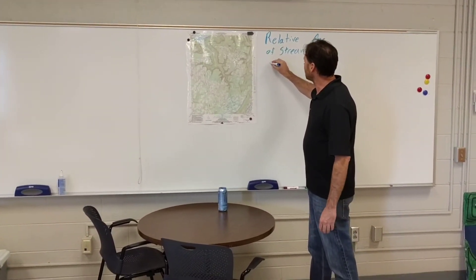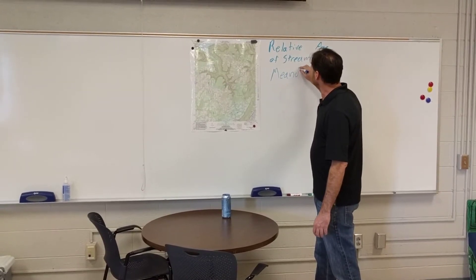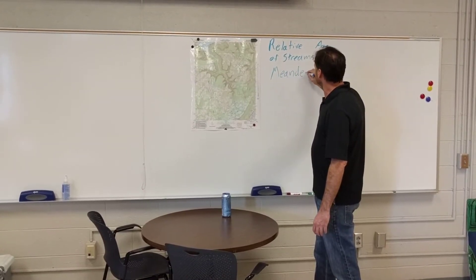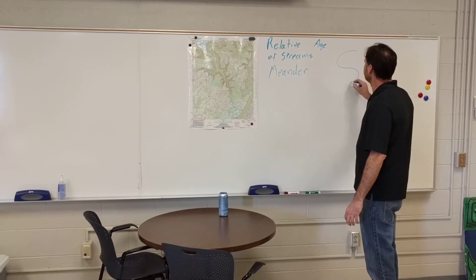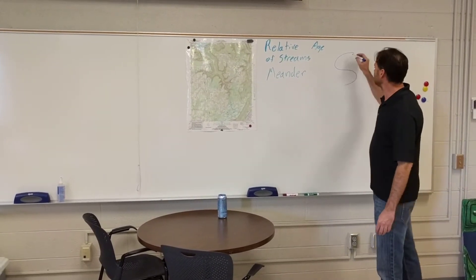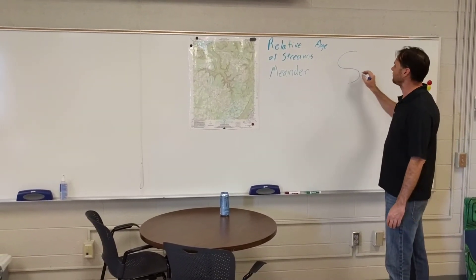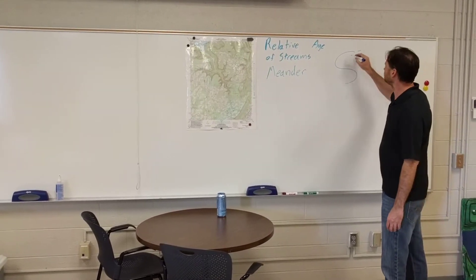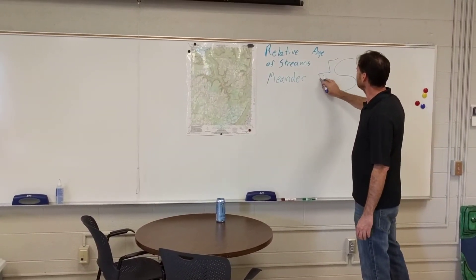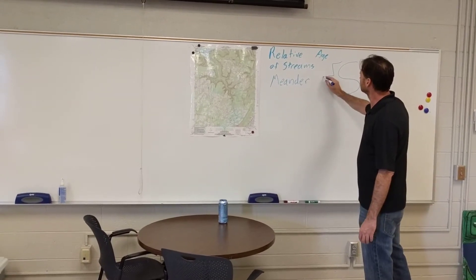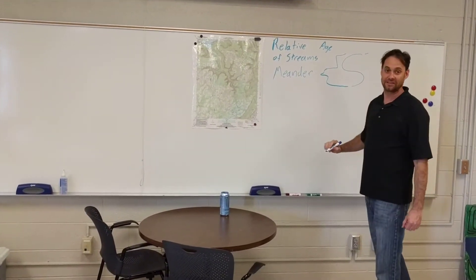The first is a meander. A meander is a curve in a stream. So if we see a stream has this shape, then this S-shape is one meander.